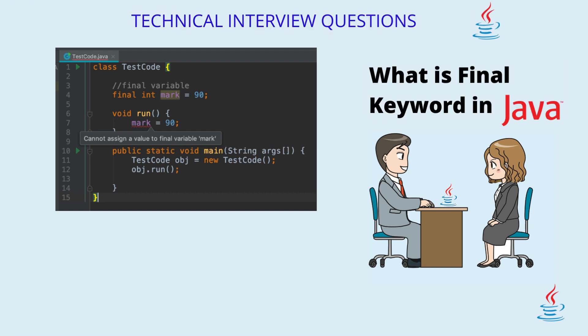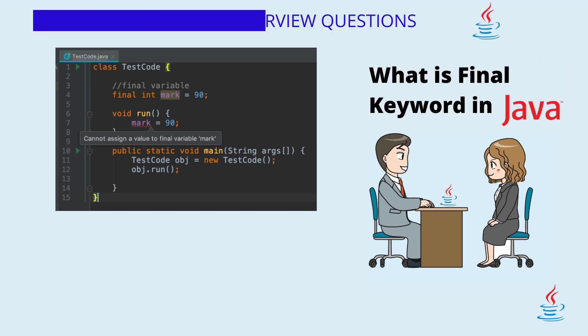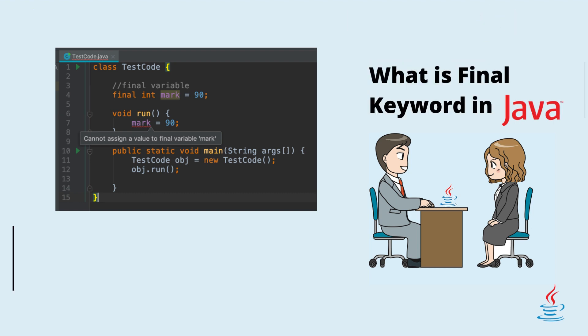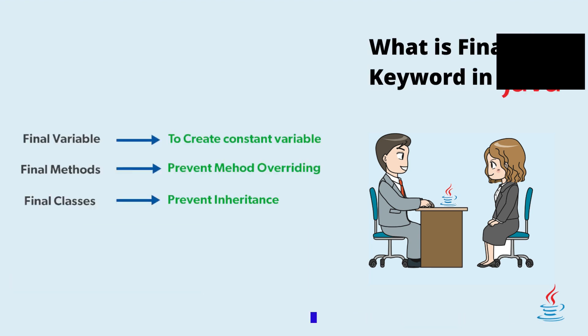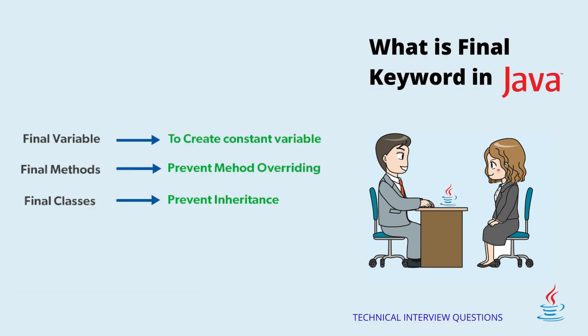What is the final keyword in Java? In Java, the final keyword is used to denote constants. It can be used with variables, methods, and classes.